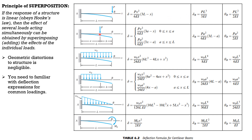For a concentrated load that does not act at the free end, there is a general expression for deflection for 0 ≤ x ≤ a and for a ≤ x ≤ L. I will not pressure you to memorize this because you can derive it by making it an individual problem. What is important are the expressions for delta B and theta B. However, it's also difficult to memorize these formulas, so it requires familiarization with common loadings.